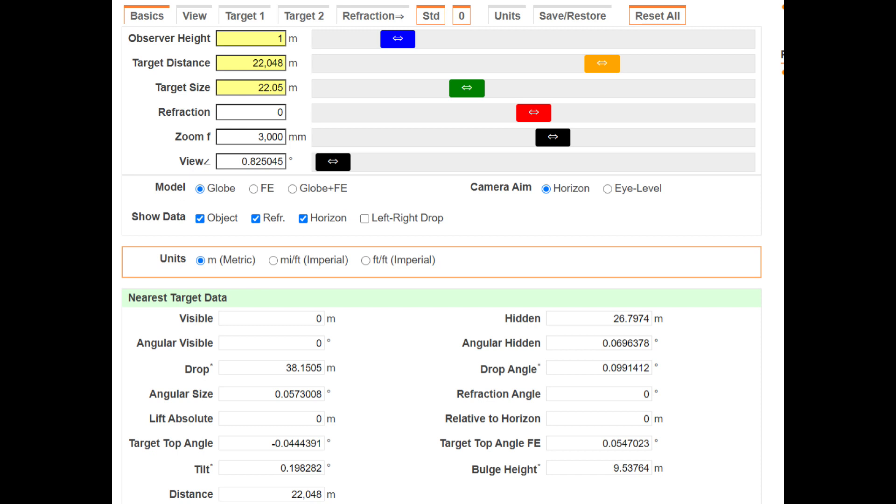The observer height is one meter and the target distance is 22.048 kilometers and the target size, which would be the size of the laser beam, is 22 meters. Now, look right down here on the right where it says hidden. 26.79 meters would be hidden. So, on a day with zero refraction, you will not be able to see this light. But the thing is, days with zero refraction are very rare.